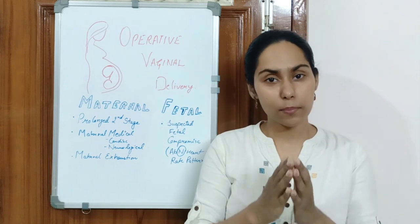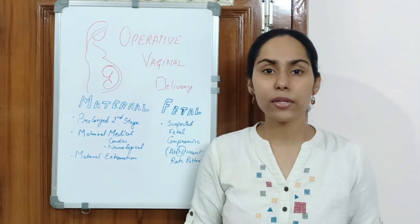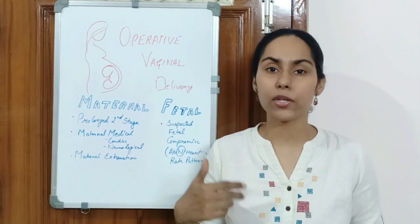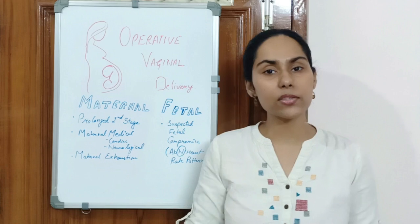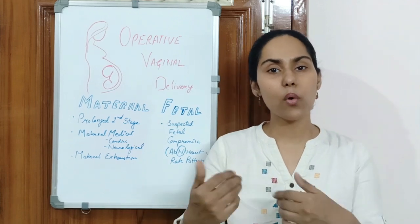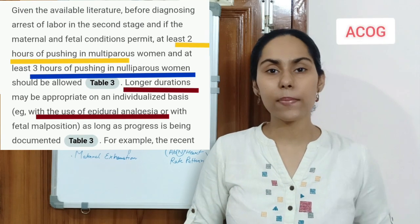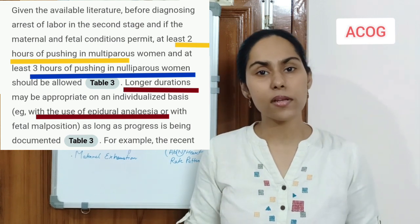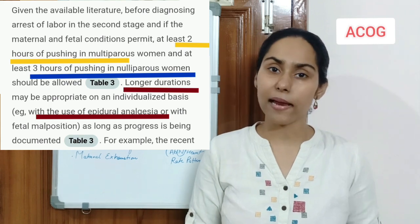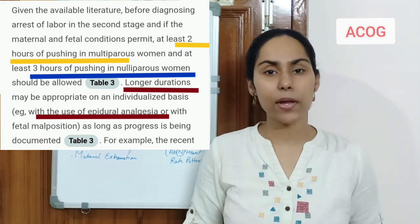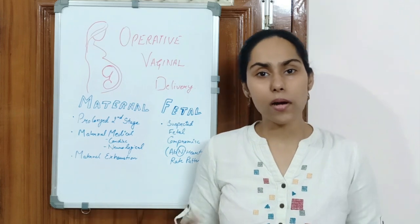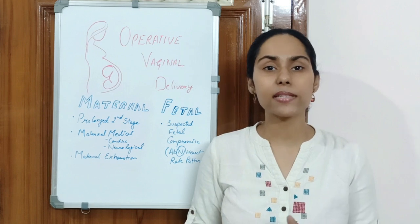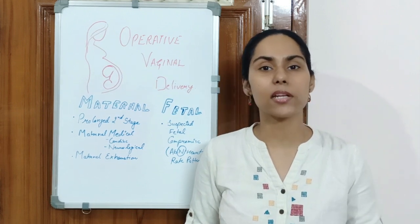In case of a primigravida we can give a patient 3 hours, and in case of a multigravida we can give the patient 2 hours. If we are using regional anesthesia we give extra hours. So in case of a primigravida patient if it is prolonged more than 3 hours, or more than 4 hours with regional anesthesia, and in a multigravida patient prolonged for more than 2 hours or 3 hours with regional anesthesia, we consider the patient is having a prolonged second stage of labor.